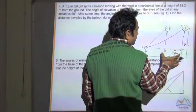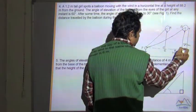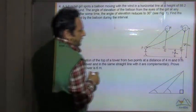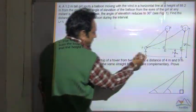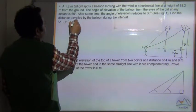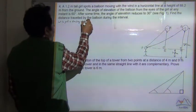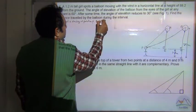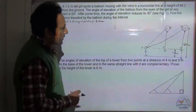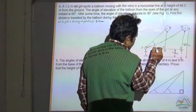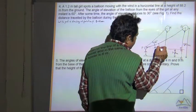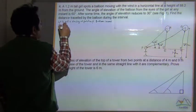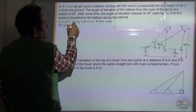The balloon moves from point A to B, which is equal to C to E because these are perpendicular. Let the girl be standing at position E and F. The balloon moves from position A to position B — the angle changes from 60 degrees to 30 degrees.